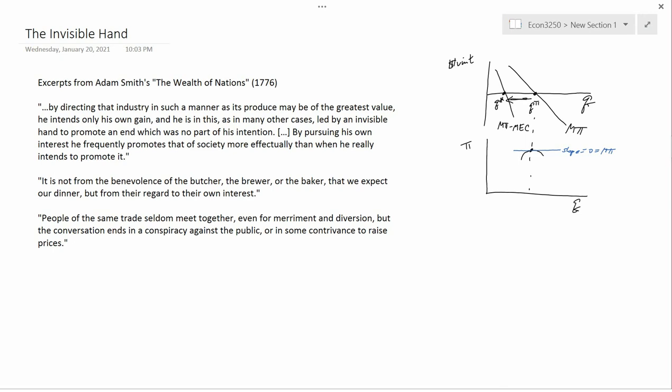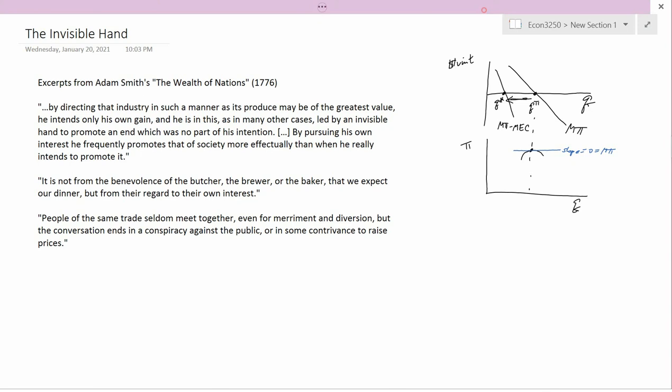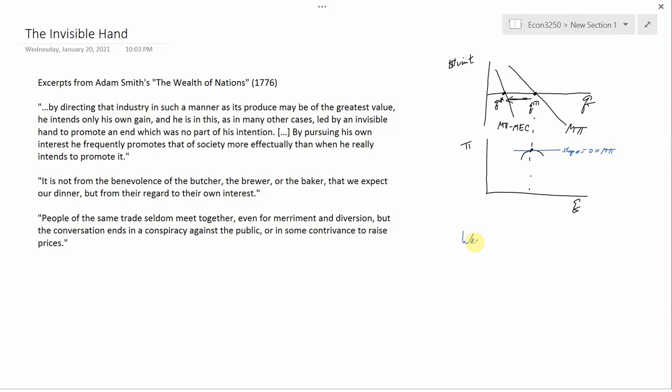So let me give the background. Before Adam Smith, the answer to the question, what constitutes the wealth of nations? In other words, what makes one country more wealthy than another would be answered by the amount of gold a country had. This is one of the biggest reasons why Spain, for example, was so interested in conquering the so-called New World, the Western Hemisphere, so they could get gold. Because the idea was, the more gold you had, the richer the country was.